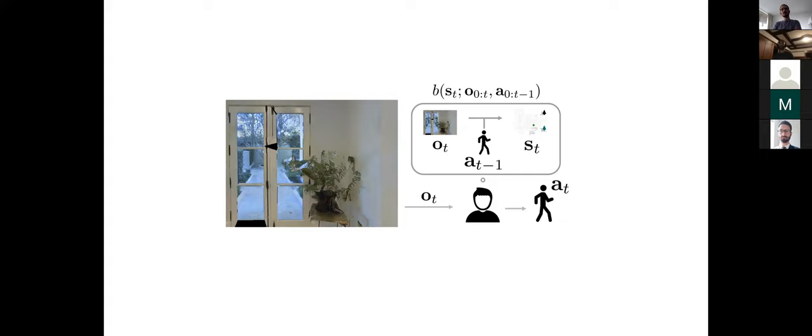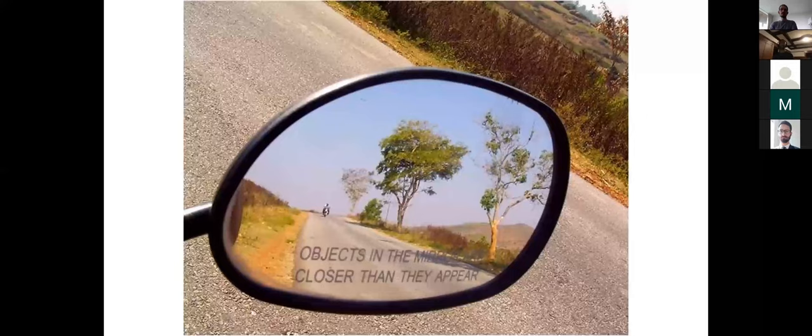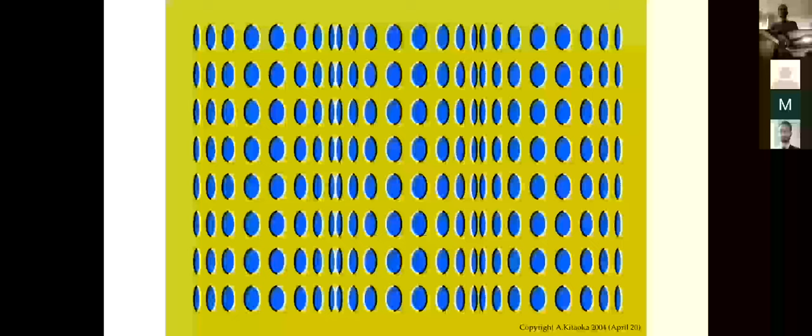The user takes an action that makes sense given where they think they are — for example, walking toward the goal. The problem is that the user may have perception difficulties or systematic biases that prevent them from making use of the full image observation, which prevents them from accurately estimating the state and deciding what the optimal action should be.